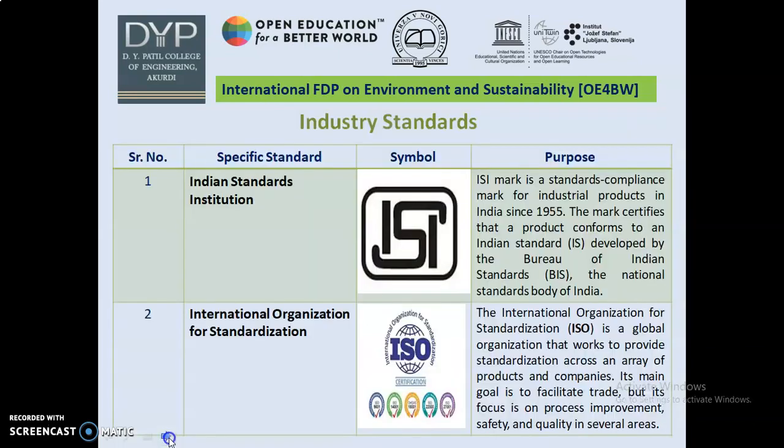In order to minimize household energy consumption, certain standards have to be followed. Those standards are ISI — Indian Standard Institution. The symbol is represented as shown. ISI mark is a standard compliance mark for industrial products in India since 1955. The mark satisfies that a product conforms to an Indian standard developed by the Bureau of Indian Standard (BIS), the Indian National Standards Body of India.